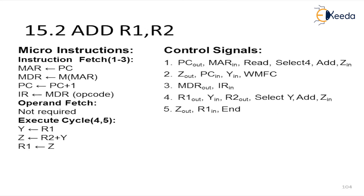Now let us look at this example. It contains the micro-instructions as well as the control signals. The micro-instructions are divided into three types: Instruction Fetch, Operand Fetch, and the Execute cycle, along with the control signals that will be executing. For the Instruction Fetch: the data from the PC is directly going towards MAR — that is, the memory address register. MAR bracket memory bracket MAR is indirectly connected to the location where the contents of the memory address register are stored, and the data is passed to MDR — memory data register. The content of PC plus 1 is directly going towards PC. Then the opcode of MDR — the contents are passing towards the instruction register.